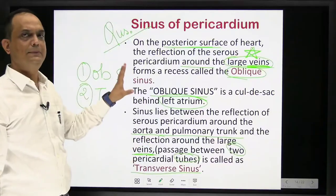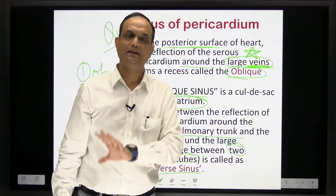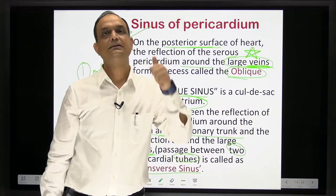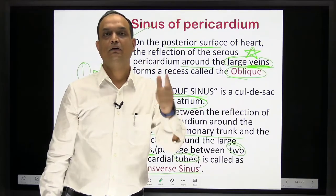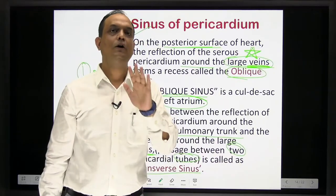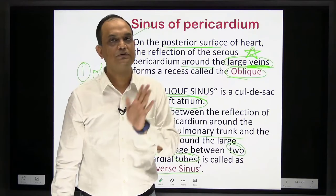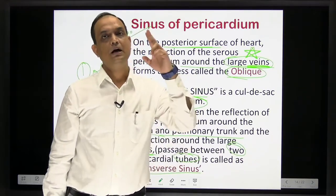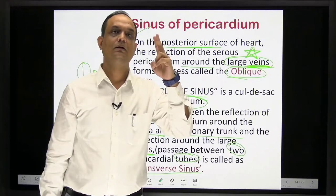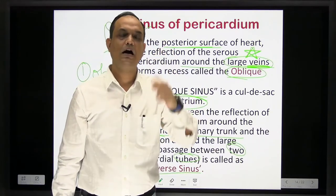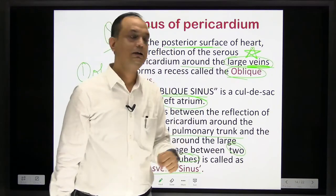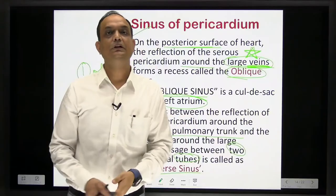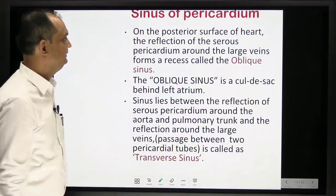In summary for the sinuses of pericardium: there are two — the oblique sinus and the transverse sinus. The oblique sinus is on the posterior surface. The transverse sinus is near the upper part of the heart; it lies between the arterial vessels anteriorly and the veins posteriorly.